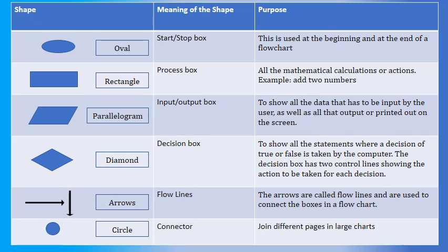Next shape, diamond. Meaning of the shape, decision box. To show all the statements where a decision of true or false is taken by the computer. The decision box has two control lines showing the action to be taken for each decision.